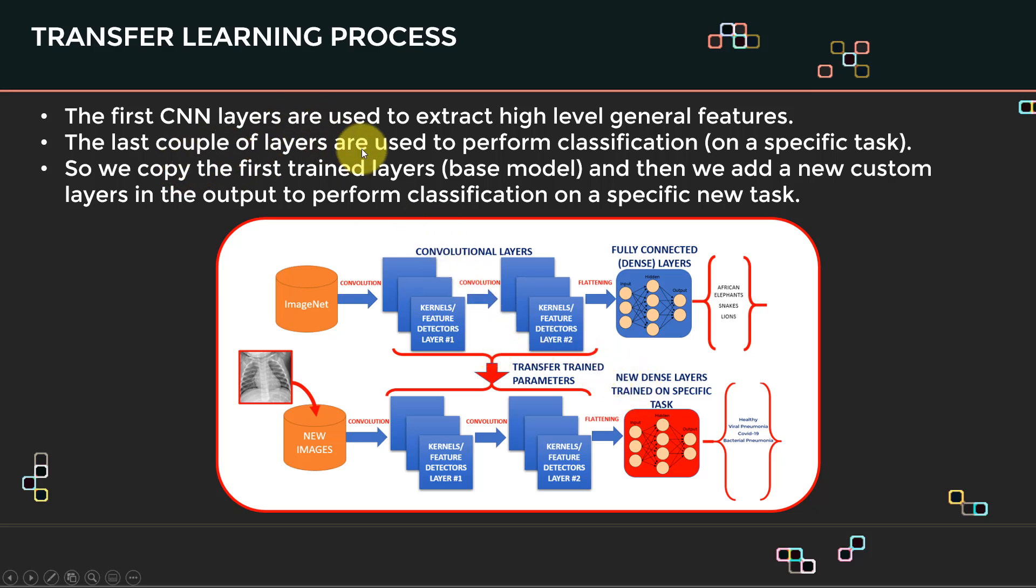So the first CNN layers, as I mentioned, are used to extract high-level general features. And the last couple of layers are used to perform classification on a specific task. So what we do is that we copy the first trained layers, or what we call the base model. We move it as is. And then we add in new custom layers in the output to perform classification on a specific given task. If it's COVID-19 detection or if it's an Emotion AI classification.